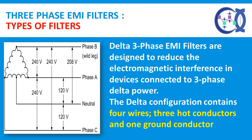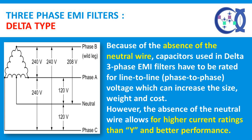Different Types of EMI Filters — Delta Three-Phase EMI Filter: Delta three-phase EMI filters are designed to reduce electromagnetic interference in devices connected to three-phase delta power. The delta configuration contains four wires — three hot conductors and one ground conductor. Because of the absence of the neutral wire, capacitors used in delta three-phase EMI filters have to be rated for line-to-line, phase-to-phase voltage, which can increase the size, weight, and cost. However, the absence of the neutral wire allows for higher current ratings than Y and better performance in the same given cubic volume.